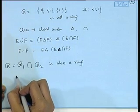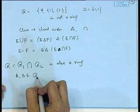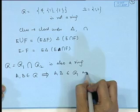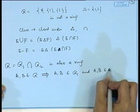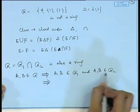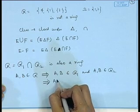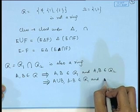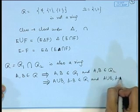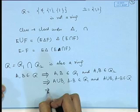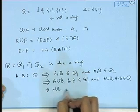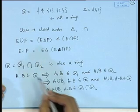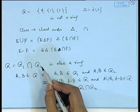Furthermore, if R1 is a ring and R2 is a ring, then their intersection R is also a ring. If A and B belong to R, then A and B both belong to R1 and R2. Since R1 and R2 are both rings, A union B and A minus B will belong to both R1 and R2, and therefore to R1 intersection R2. Hence the intersection of two rings is again a ring.